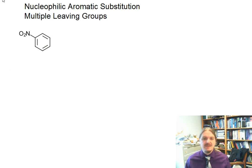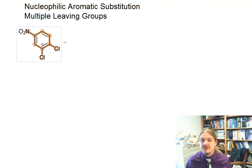Let's say you have this nitrobenzene with leaving groups in two positions—two chlorines. I want to do a nucleophilic aromatic substitution reaction with sodium hydroxide and water.